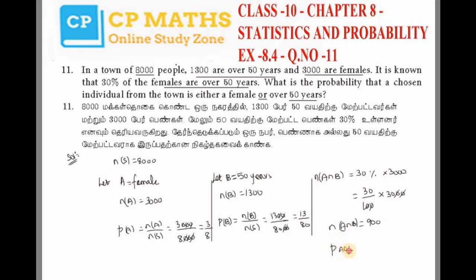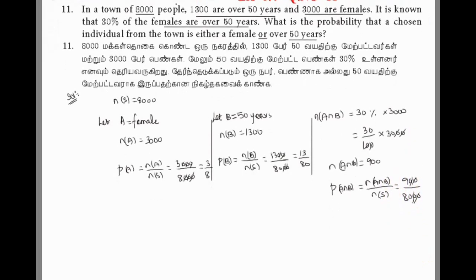So n(A∩B) is 900. P(A∩B) equals n(A∩B) divided by n(S), so 900 divided by 8,000. Canceling 200, we get 9 by 80. Or canceling one zero, we get 30 by 18... wait, let me check. Canceling 200 we get 9 by 80.